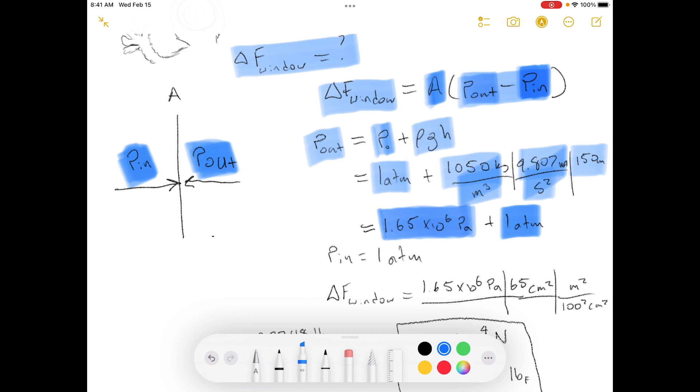we're doing P out minus P in. We know that P in is 1 atmosphere. So I'll just leave this 1 atmosphere on the outside, and it's going to cancel with P in.